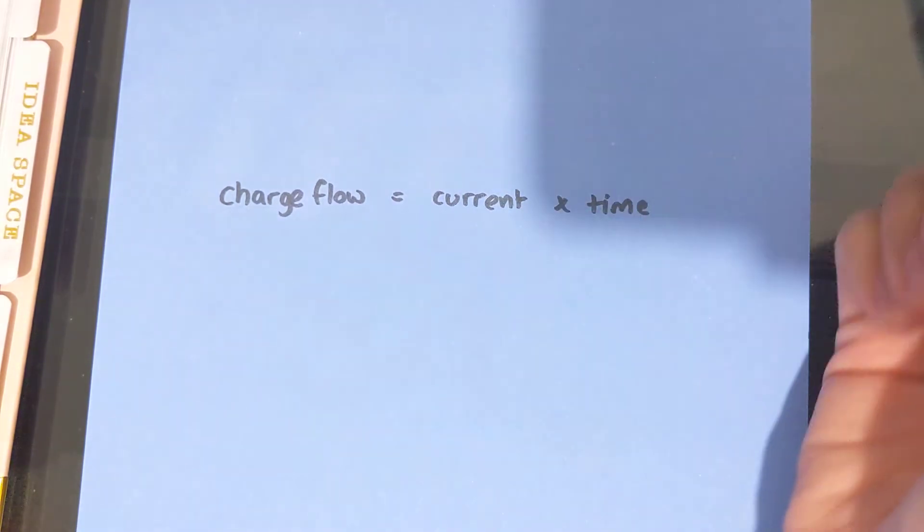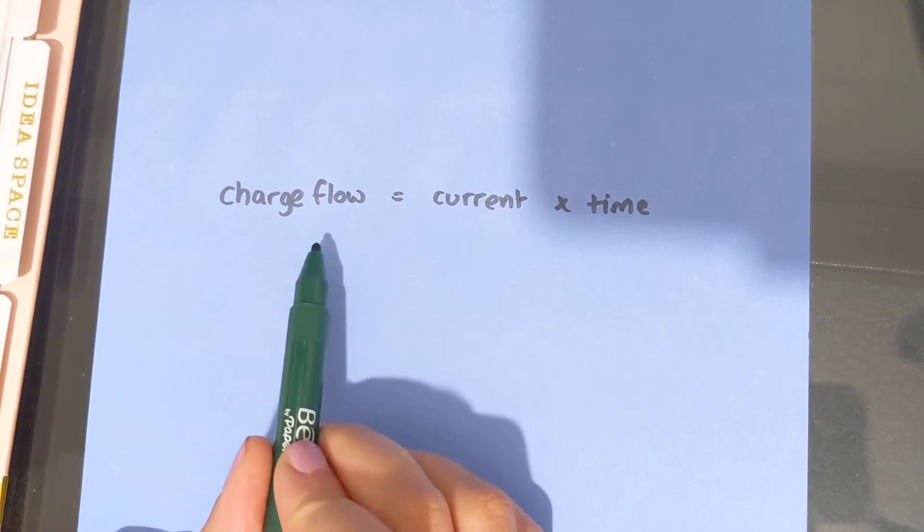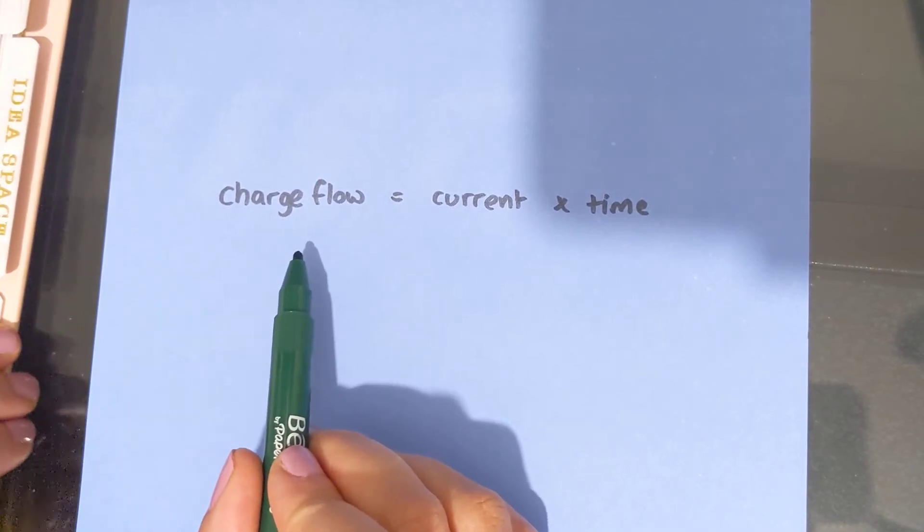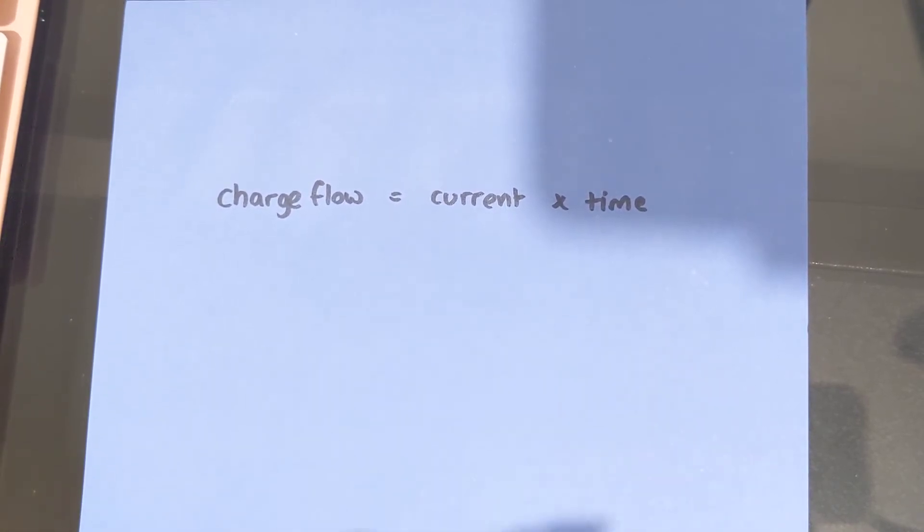So charge flow is, well, current is the flow of charge. And we understand charge to be lots and lots of electrons. So current is a measure of how many electrons are flowing.